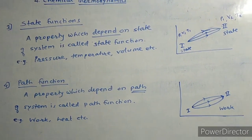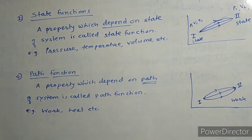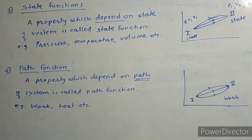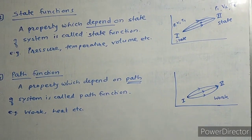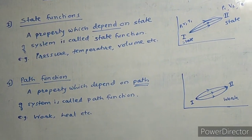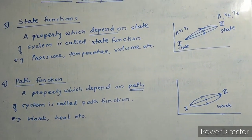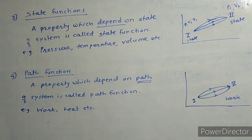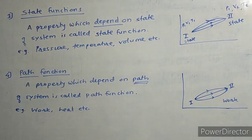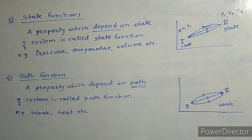The second type of function is the path function. A property which depends on the path followed by the system is called the path function. In the diagram, there are two states and three different paths between them — upper, straight, and lower. Work and heat are path functions because they depend on which path is followed, not just on the initial and final states.